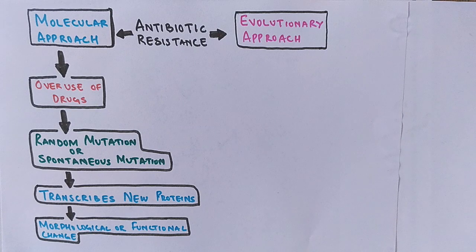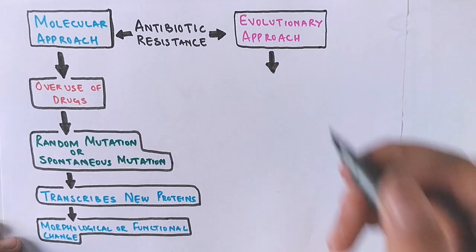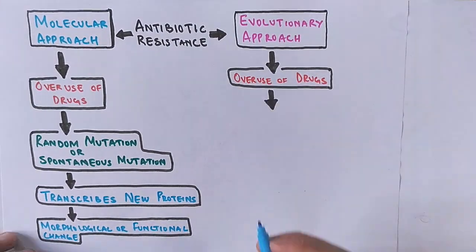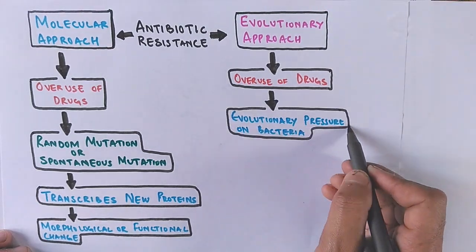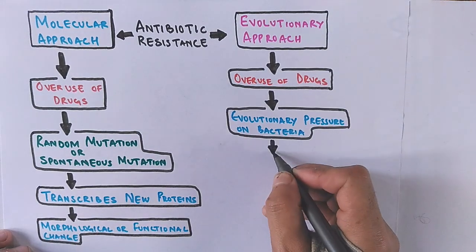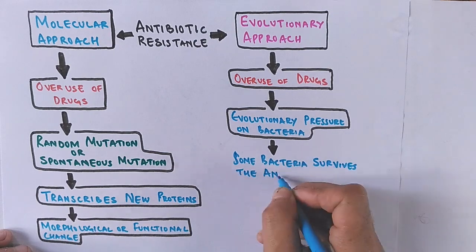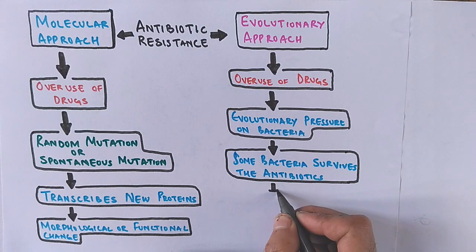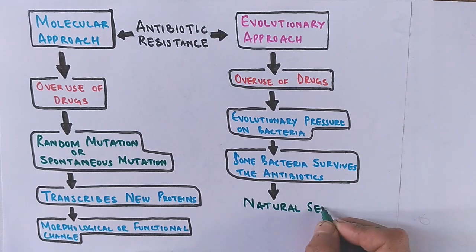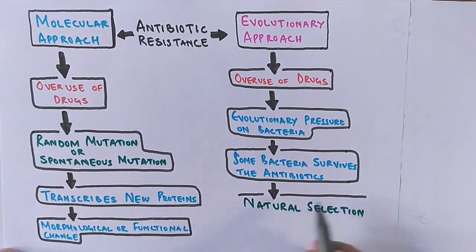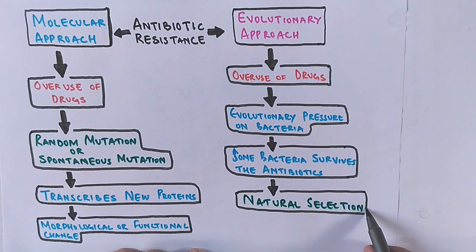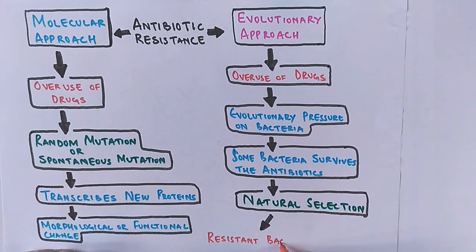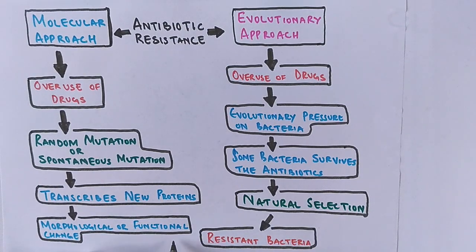The other approach is the evolutionary approach. When there is overuse of drugs, there is evolutionary pressure on bacteria. Some bacteria survive the antibiotics — what we call survival of the fittest. After this, there is natural selection of the strains able to resist the antibiotics, and this is how antibiotic resistance occurs through the evolutionary process.